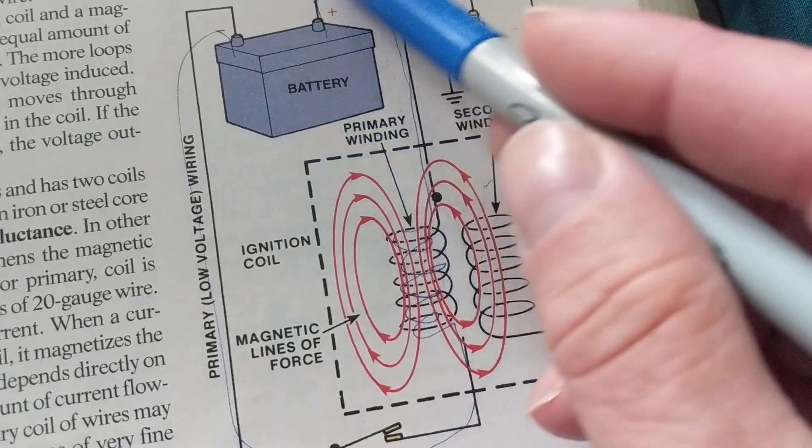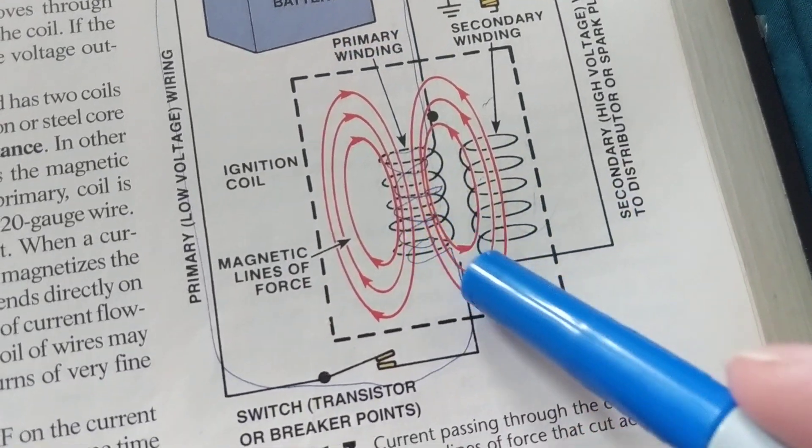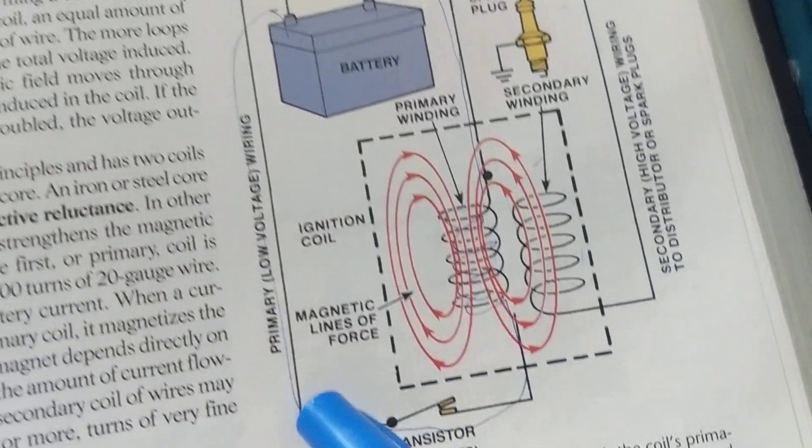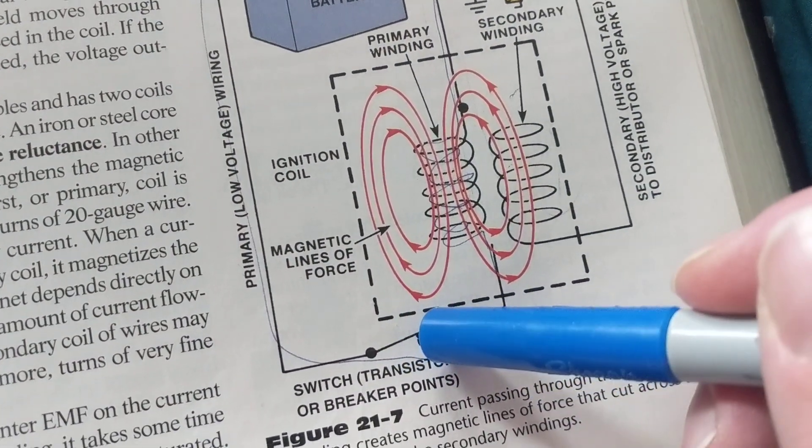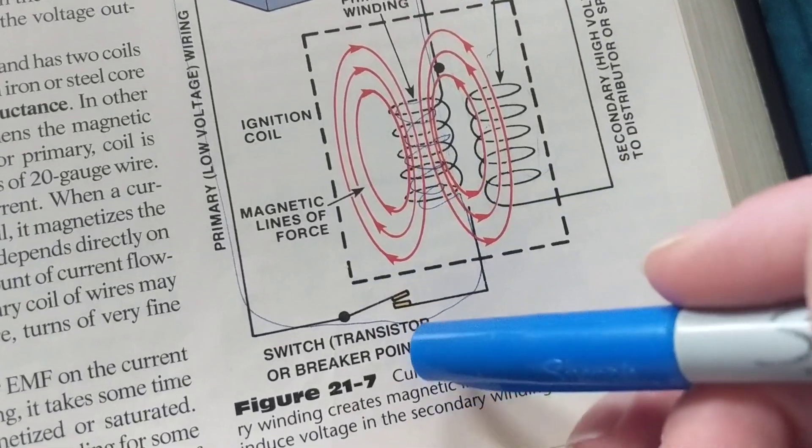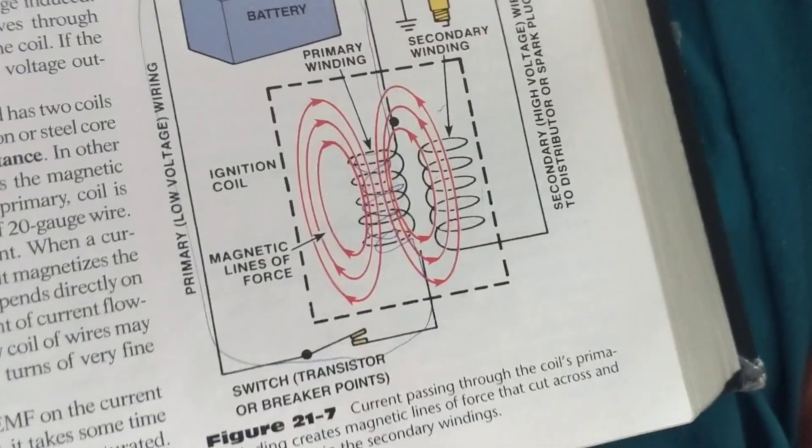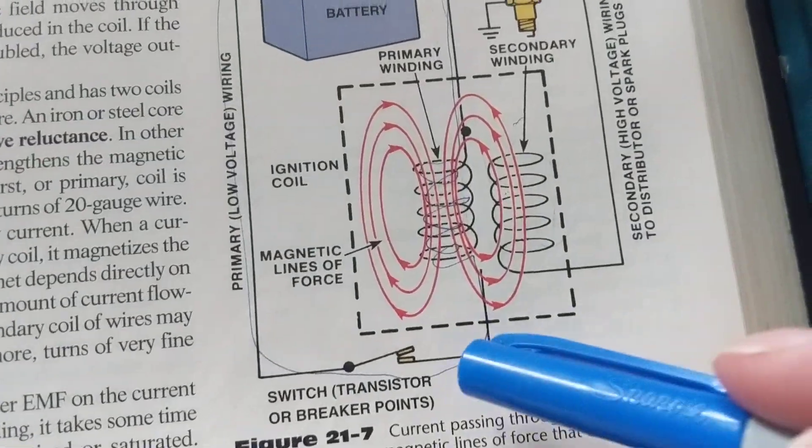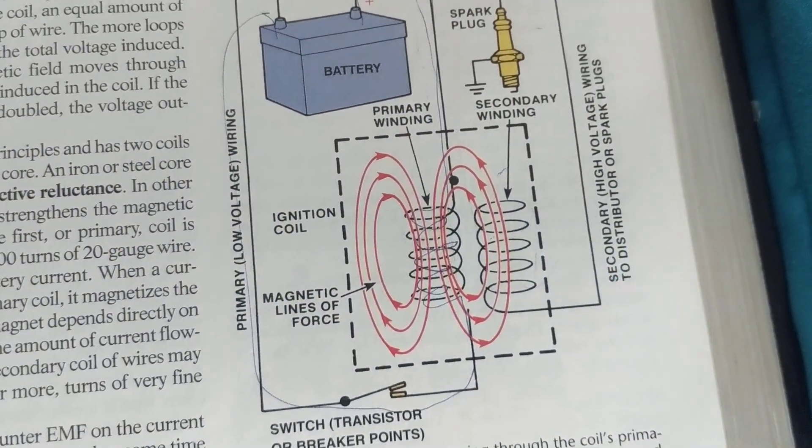The current coming from the battery goes through here, through the turns of wires, through a switch over here, and back to the battery. Now this switch is turned on and off. Nowadays we take, instead of a switch, we put a transistor which is a device that can be turned on and off to create the same reaction. How is it that we define this as a transformer?